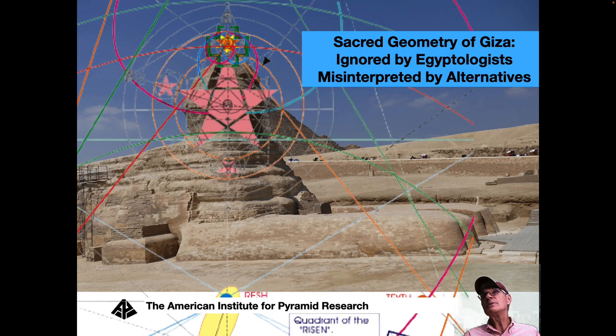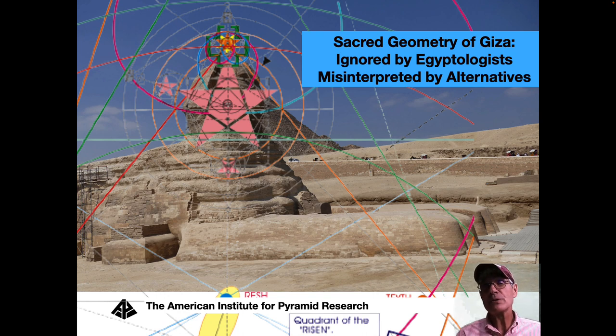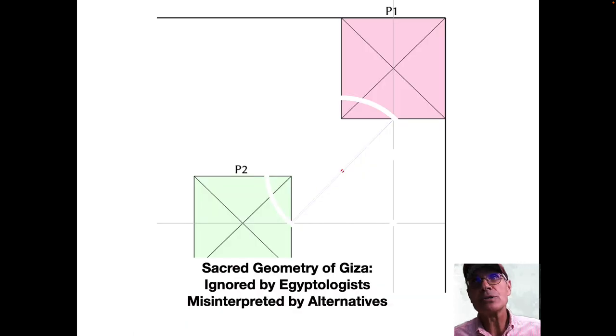But this sacred geometry is also misinterpreted often by alternatives who jump to the immediate conclusion that the Egyptians were too stupid to do this kind of sacred geometry. So this has to be evidence that this came from Atlantis or outer space or something. And that's not necessarily the right conclusion. So let's look at a piece of sacred geometry that I recently discovered at Giza.